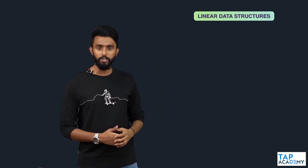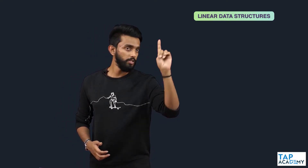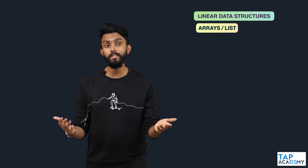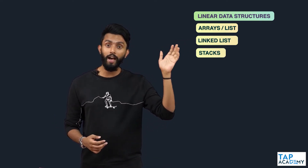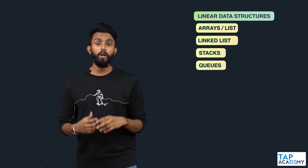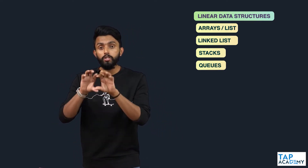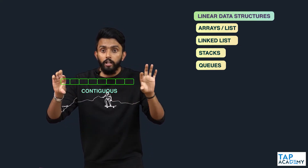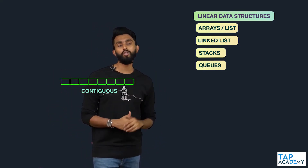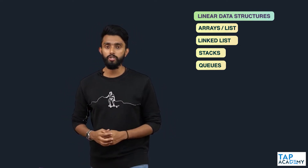What are the linear data structures? There are four linear data structures: arrays, or what we call in Python as lists, linked lists, stacks, and queues. These are the four data structures. They are called linear data structures because they store data in a contiguous manner — one next to the other.